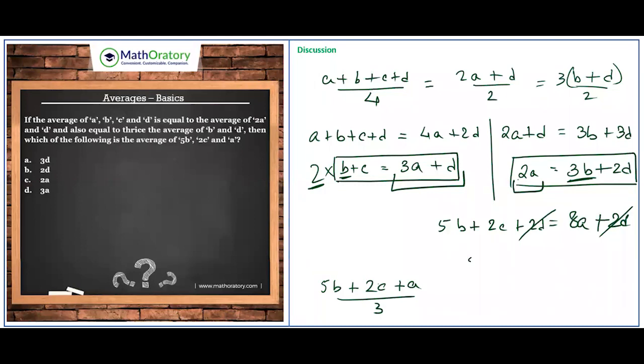So I hope you can see now that 5B plus 2C plus A should be equal to 9A. Simply adding A on both the sides. So this entire thing is 9A. So this item should be 9A divided by 3, which is 3A.